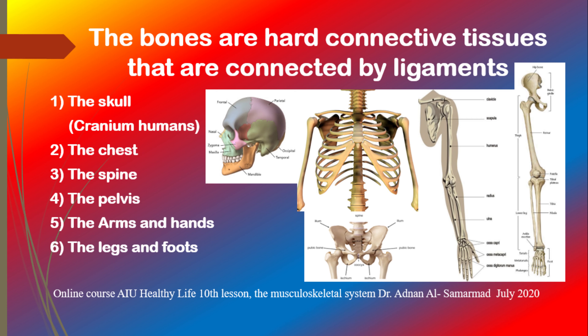The pelvis bones consist of three bones: the first one is Os ilii, the second one called Os ischii, and the third one is Os pubis. The arm bones consist of the upper arm, humerus, and the lower arm of the ulna and the radius. The hand has eight ossa carpalia, ossa metacarpalia, and phalanges.